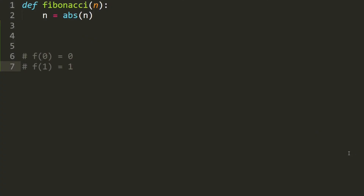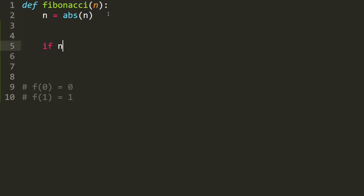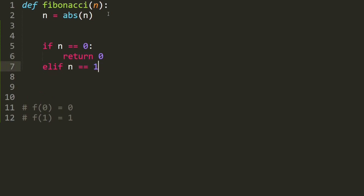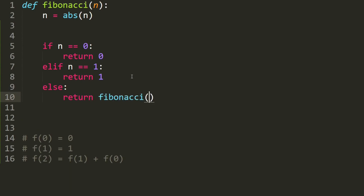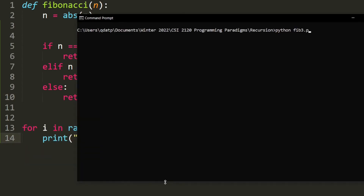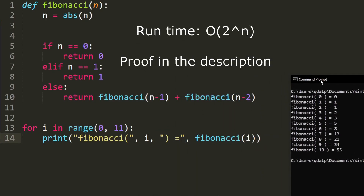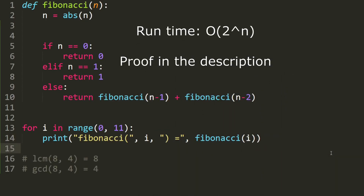Finally, let's write the recursive code. We know F0 is 0 and F1 is 1, so: if n equals 0, return 0; else if n equals 1, return 1. If n is bigger than 1, then else return fibonacci(n-1) plus fibonacci(n-2). Let's test it — as you can see, our program is producing the correct results. And that is basically it for today.